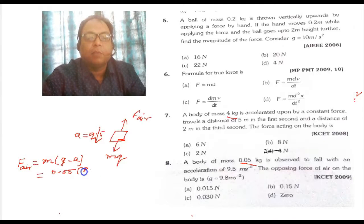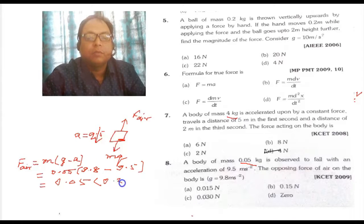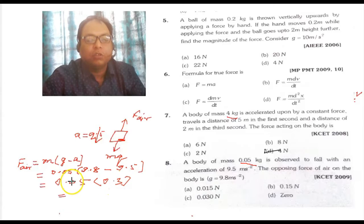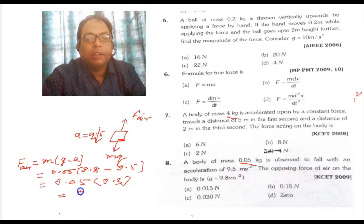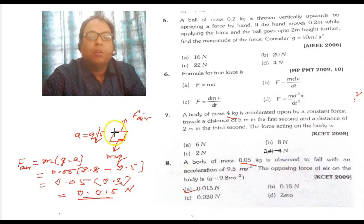g = 9.8 m/s² as given in the problem, and acceleration = 9.5 m/s². Substituting: F_air = 0.05 × (9.8 - 9.5) = 0.05 × 0.3 = 0.015 Newtons. That is the opposing force. Option A is the correct option.